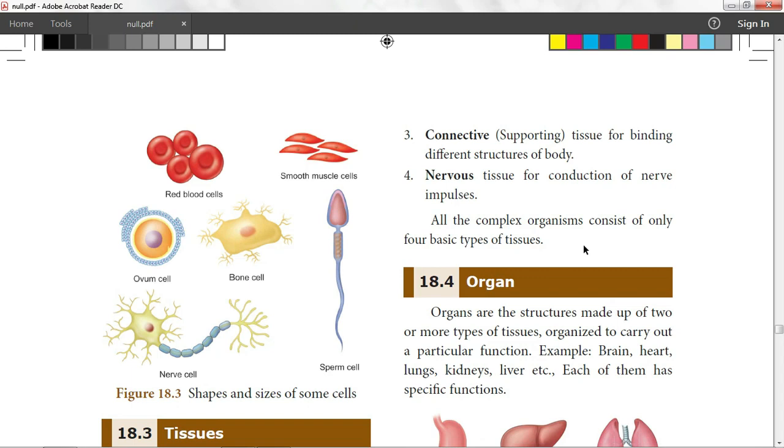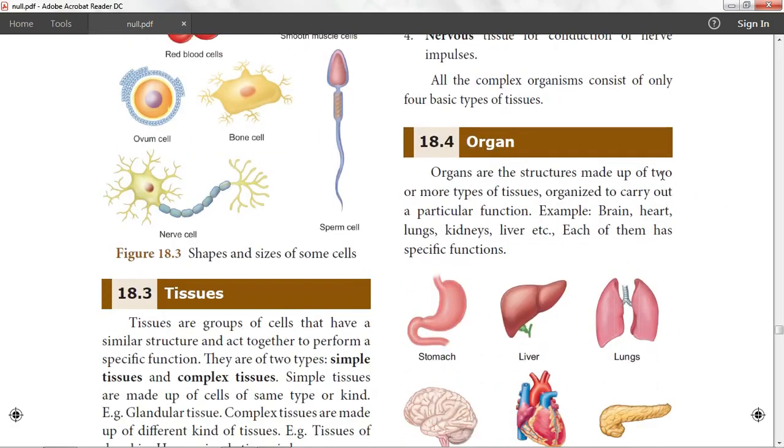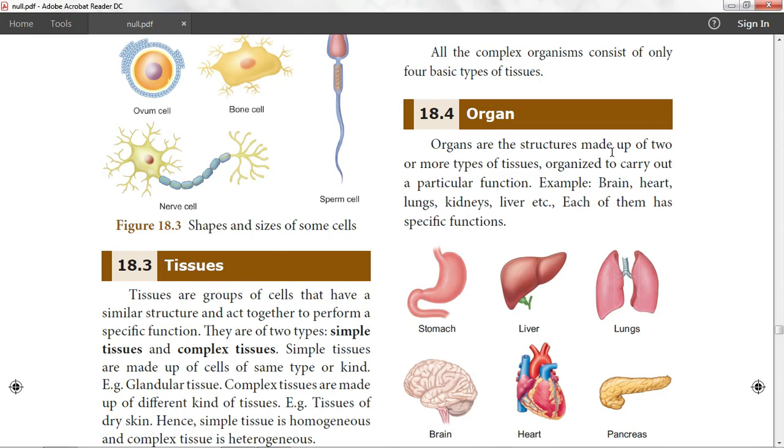All complex organisms consist of only four basic types of tissues organized to carry out a particular function. Examples: brain, heart, lung, kidney, liver, etc. Each of them has specific functions.